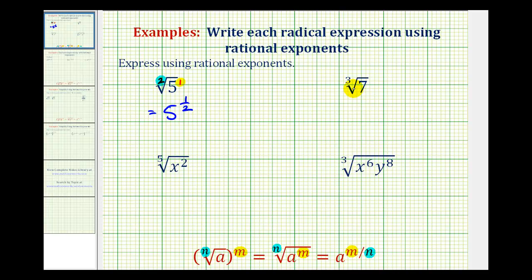For the cube root of seven, since the index is three and the exponent on the seven is one, this is equal to seven raised to the power of one-third. So taking the square root of something is the same as raising it to the one-half power, and taking the cube root of something is the same as raising it to the one-third power.